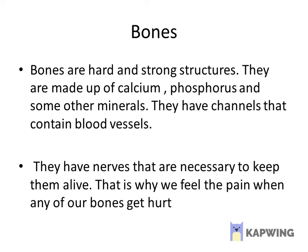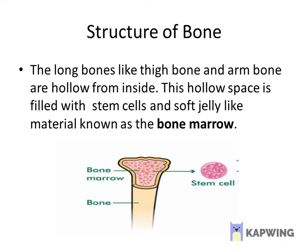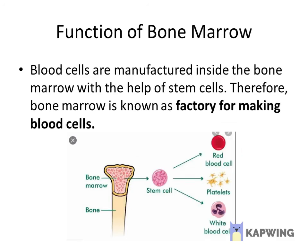Moving to the next point: the structure of bones. Long bones, like the thigh bone and arm bones, are hollow from inside — they have empty space. This hollow space is filled with stem cells and a soft jelly-like material known as bone marrow. The function of bone marrow is that blood cells are manufactured inside it with the help of stem cells. Various blood cells — like RBCs, WBCs, and platelets — are manufactured inside this bone marrow. That is why bone marrow is known as the factory for making blood cells.